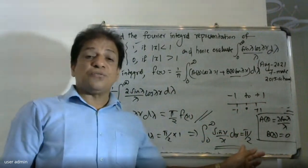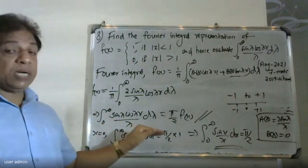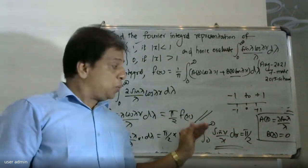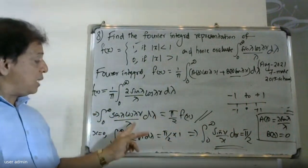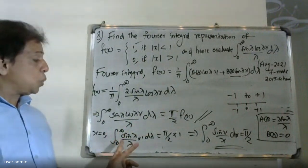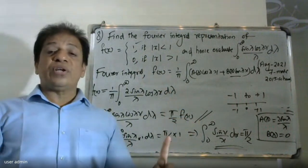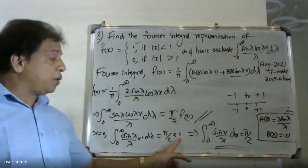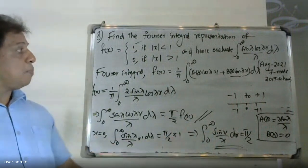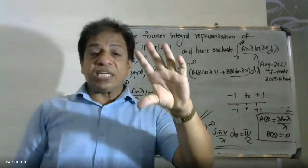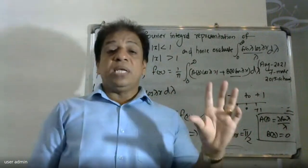This is one of the classic applications of the Fourier integral representation. The formula of f(x) is equal to one by pi, integral from zero to infinity of A(lambda) cos(lambda x) plus B(lambda) d lambda, and these two values are substituted for the representation answer.